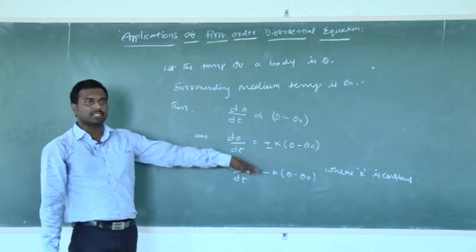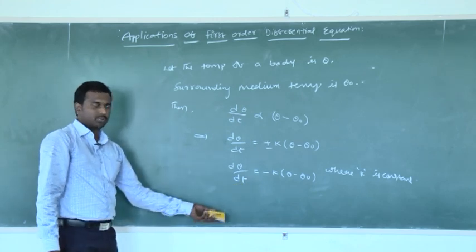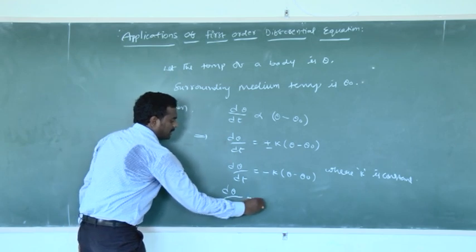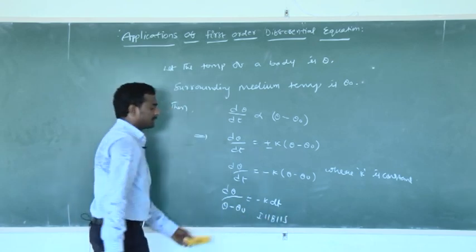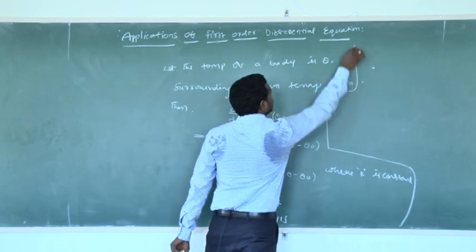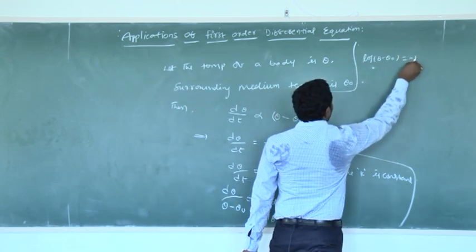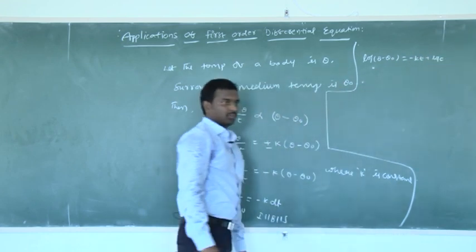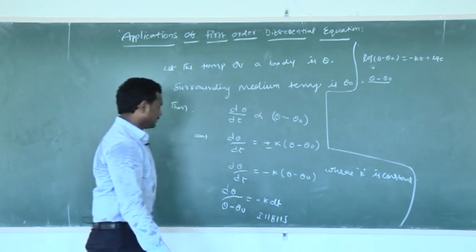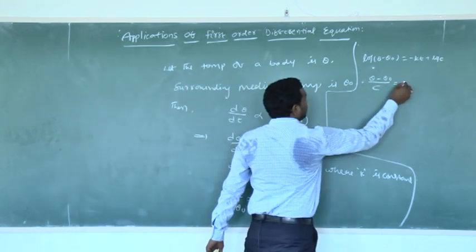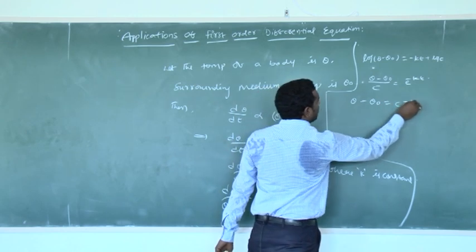We know how to solve a first order differential equation. By using the variable separable method, we can solve this: d theta by theta minus theta naught equals minus k dt. Integrating on both sides, we get log of theta minus theta naught equals minus k t plus log c. So theta minus theta naught equals c into e power minus k t.